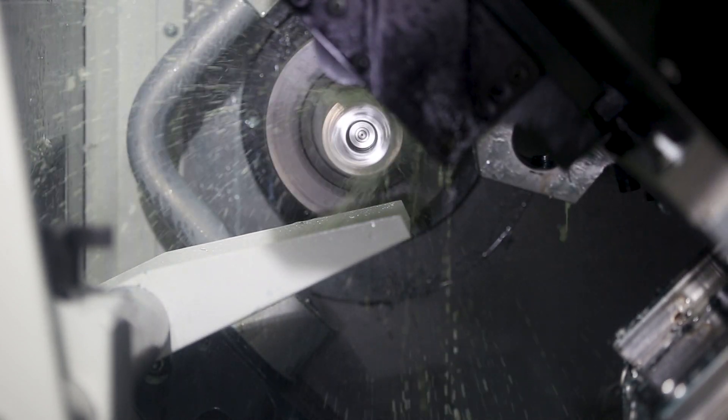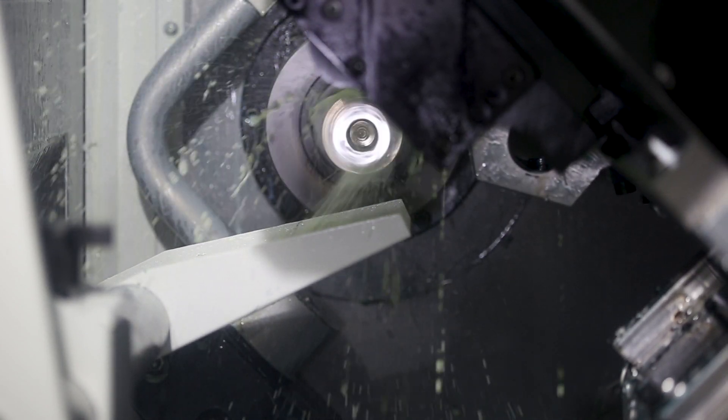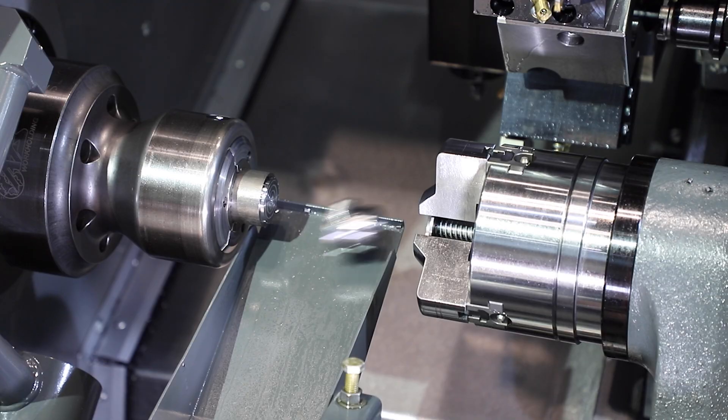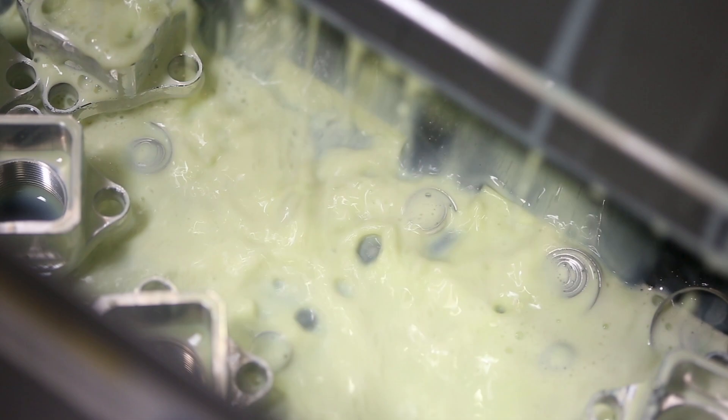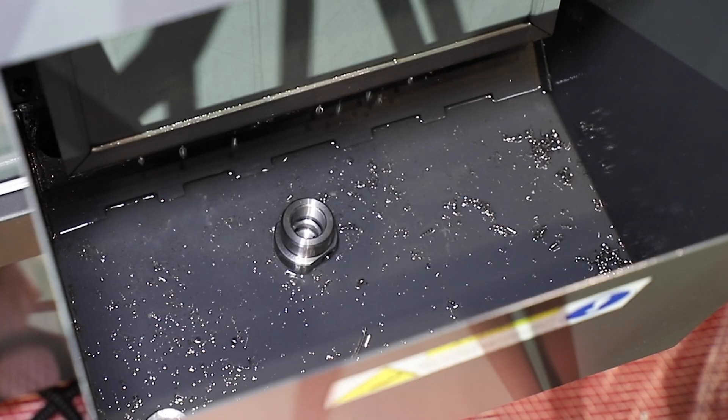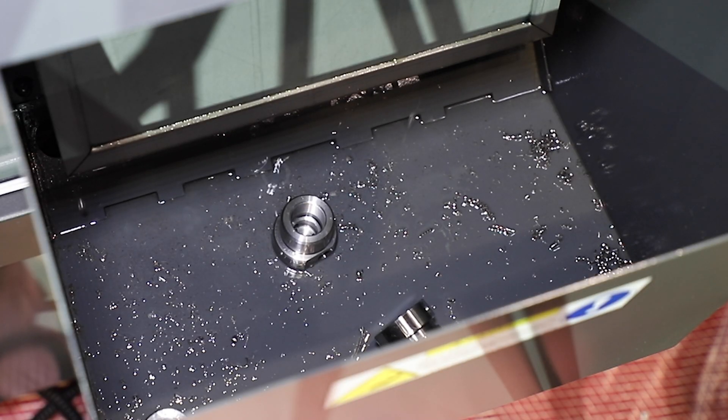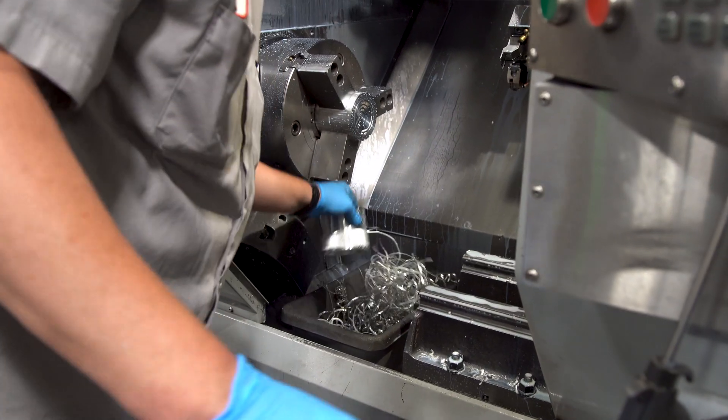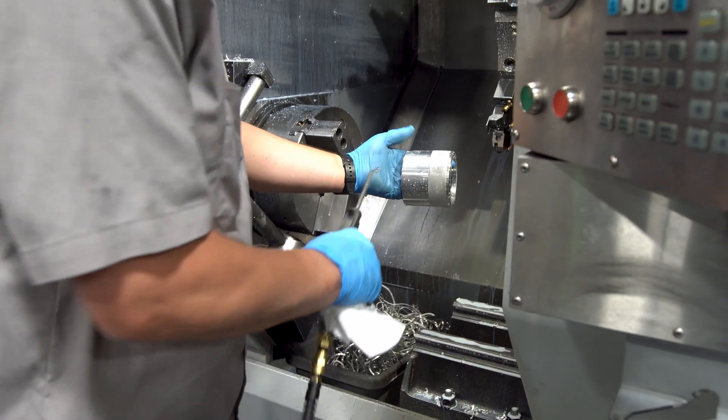It's designed to catch parts after machining is complete on either the main spindle or the secondary spindle. From there, it drops the parts in the bin located on the front of the machine. This keeps the operator from fishing parts out of the chip conveyor or the chip bin.